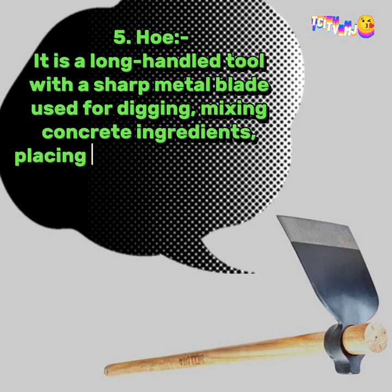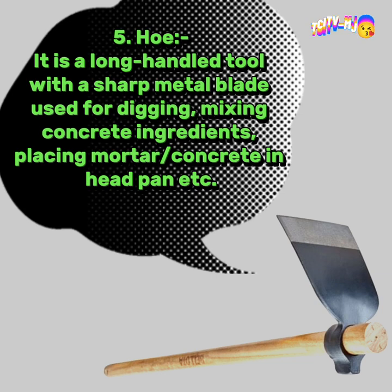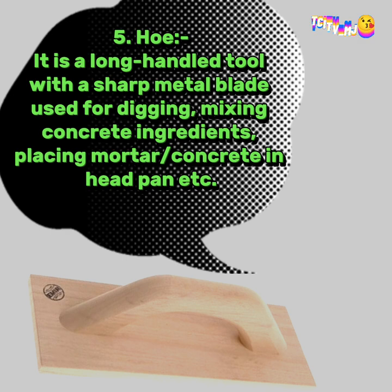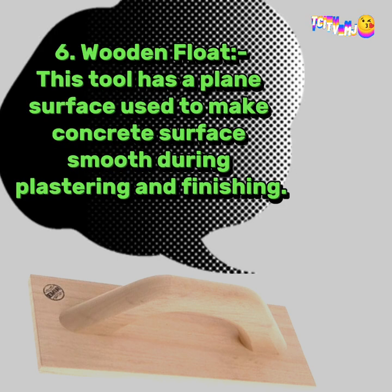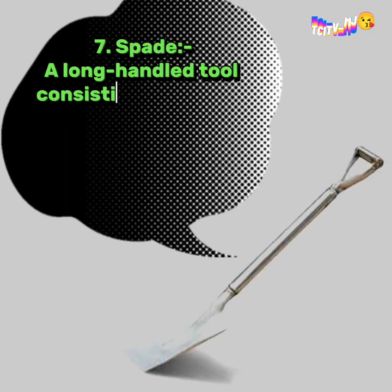5. Hoe: it is a long-handled tool with a sharp metal blade. Used for digging, mixing concrete ingredients, placing mortar, and concrete in headpan, etc. 6. Wooden Float: this tool has a plain surface, used to make concrete surface smooth during plastering and finishing.